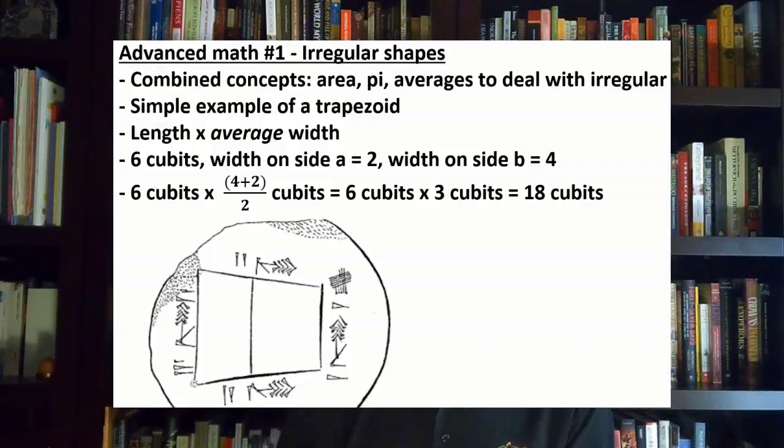They did have more complicated formulas. Say you had a trapezoid. They knew how to deal with the trapezoid. If they're looking at a trapezoid, they would take the average of the two different sides versus the one single side. So let's say it's 6 cubits wide on one side, and it's 4 cubits on one side and 2 cubits on the other. You take the average. So the 2 cubits times the 4 cubits, that average is 3 cubits. So 6 cubits times that average number, 3 cubits, gives you 18 cubits for the area. They did even more complicated ones where they have a circle connected to a trapezoid.